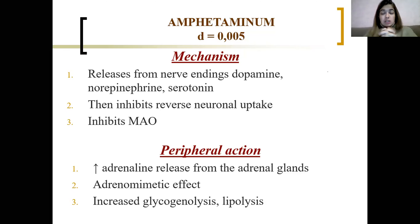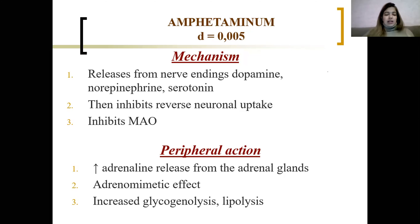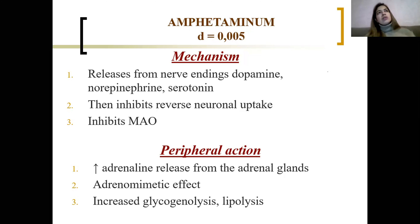So it gives a very strong effect, which is really dangerous. About the peripheral action: if there is such a large increase in monoamines, it will increase the secretion of adrenaline from the adrenal glands — an indirect effect. It will have all the effects of sympathomimetic drugs: increased glycogenolysis and lipolysis due to beta receptor stimulation, increased blood pressure due to alpha receptor stimulation, increased heart rate due to beta-1 receptor stimulation, and so on.